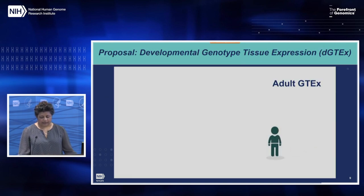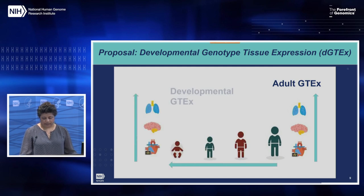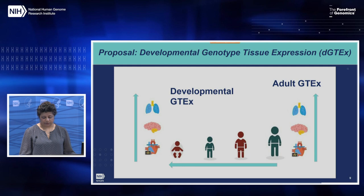Similar to GTEx, which cataloged and analyzed transcriptional profiles across multiple tissues in adults, DGTEX would also analyze transcriptional profiles in multiple tissues but across developmental stages, providing a comprehensive dataset from neonatal through adult life stages.